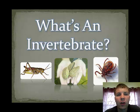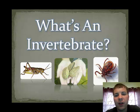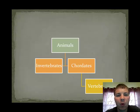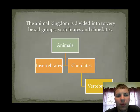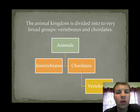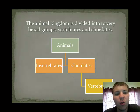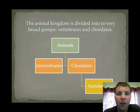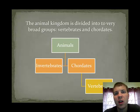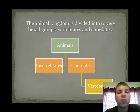We're going to begin our discussion of animals with the invertebrate group. The invertebrate group is one of two divisions of the animal kingdom. The other division will be the chordates. The subdivision of the chordate group are the vertebrates, and this is the class which amphibians, reptiles, and birds belong to.